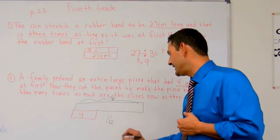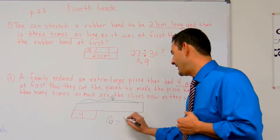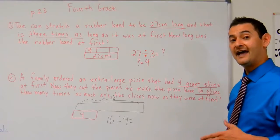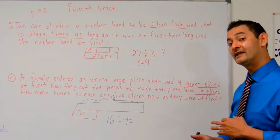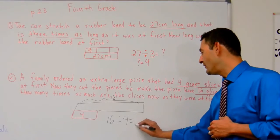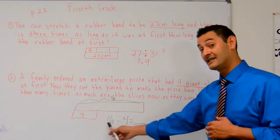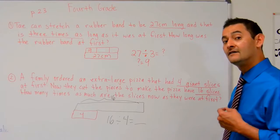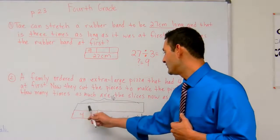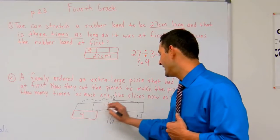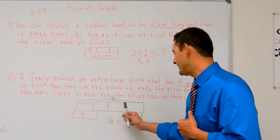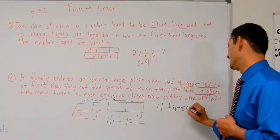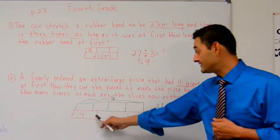So how do I figure that out? It's going to be 16 divided by 4 equals what? You can use your knowledge that division and multiplication are related. Here we have an unknown. I can say something times 4 equals 16. And 4 times what equals 16? 4. That's correct. So here, we're going to write 4. So 1, 2, 3, 4. Now it's 4 times as much as the slices were at first.